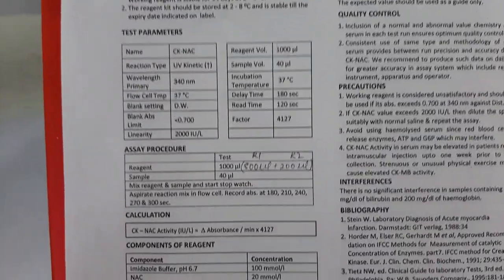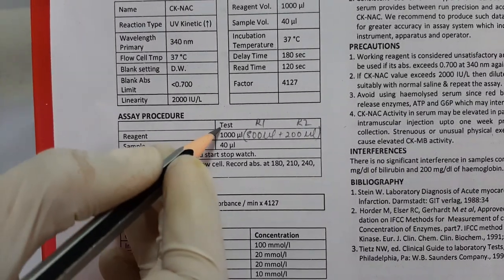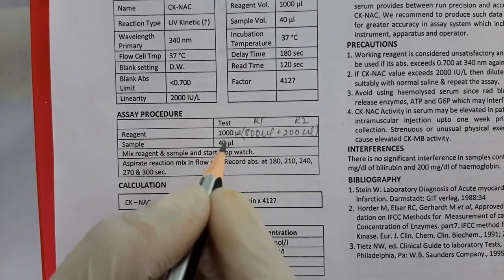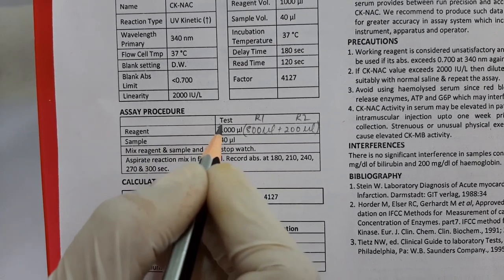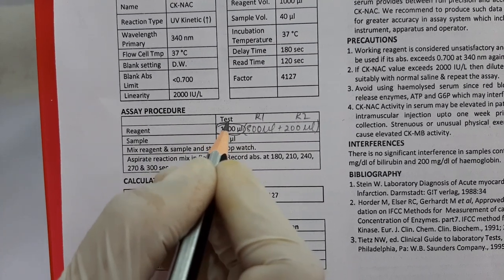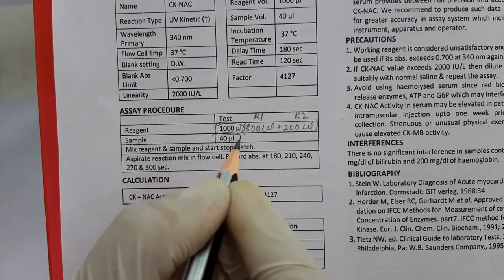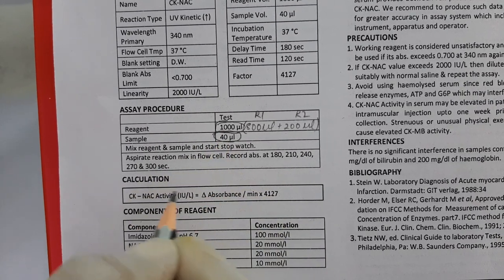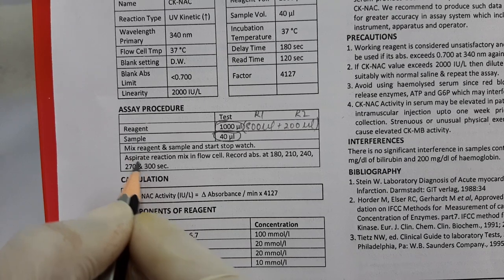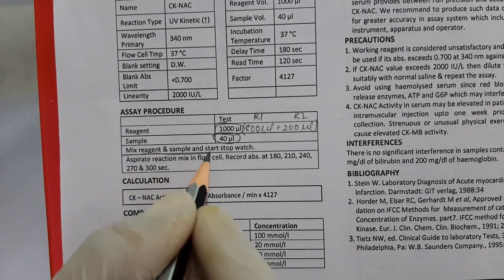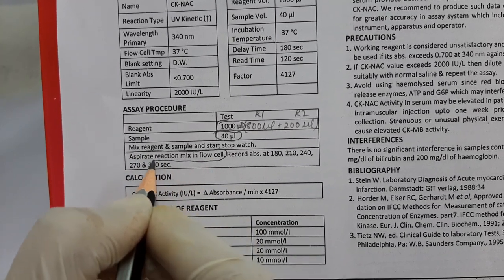Now according to the procedure, we need to take one tube for one test. In that tube, we need to add 1000 microliters of working solution and 40 microliters of patient sample. We need to mix it and then aspirate the reaction mixture into the instrument for taking the absorbance.